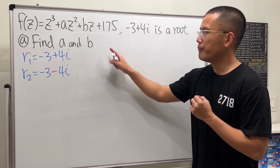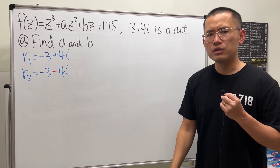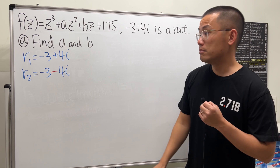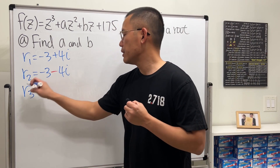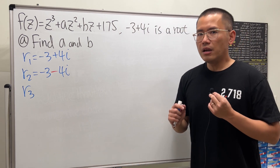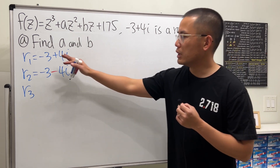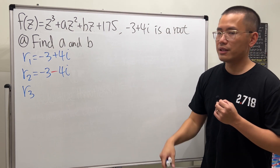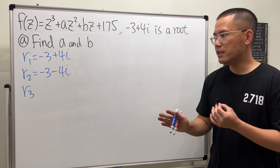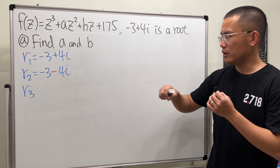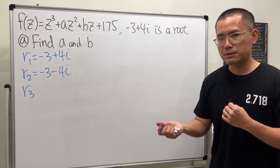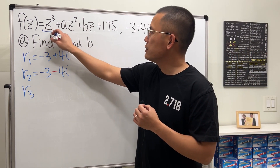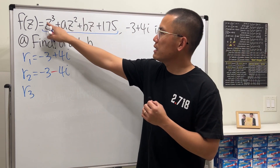This is a cubic function, so we're supposed to get three roots. There is certainly some relationship between the roots and the coefficients of the function. You can use Vieta's theorem — if you know it you can write them down right away. Notice that the leading coefficient is one.